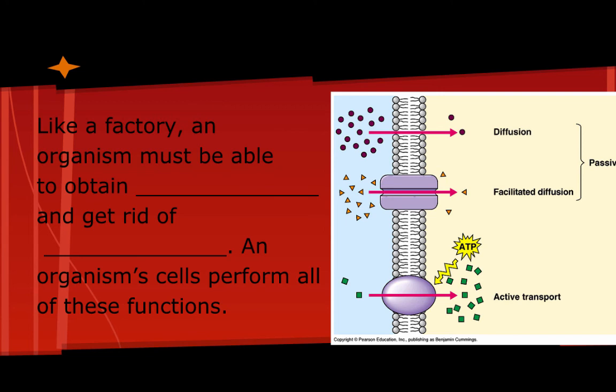That's exactly what the cell membrane does. Like a factory, an organism must be able to obtain nutrients and energy, and it needs to be able to get rid of waste. An organism's cells perform all of these functions, and in the picture here you can see some of the different things we're going to talk about.